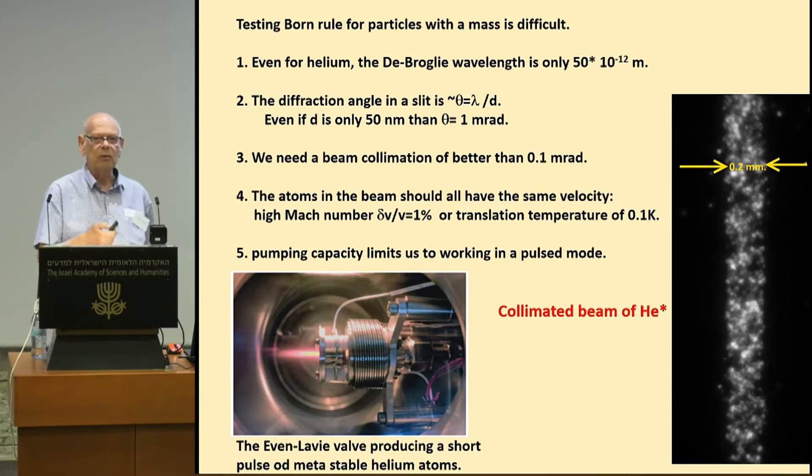The reason is that the wavelength, even if a very light atom like helium, is extremely small, 50 picometer. And if you make a slit, the smallest slit you can reliably make is on the order of 100 nanometer. So if you calculate the diffraction pattern, it's the dimension of the slit divided by the wavelength, you get a very small diffraction angle. The wavelength is just too small.